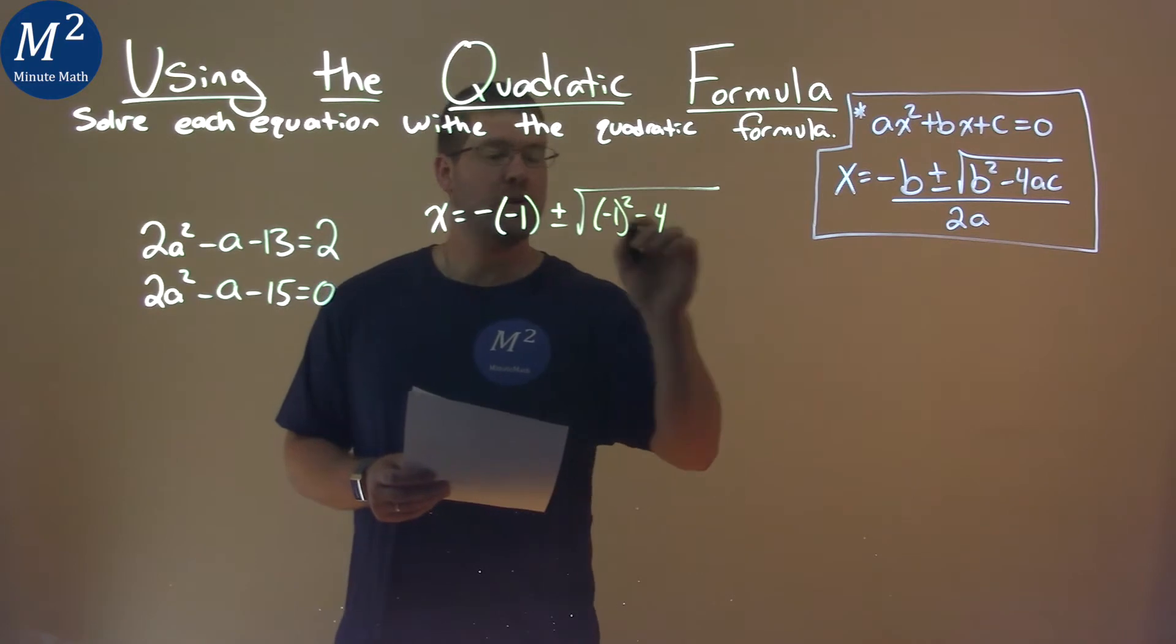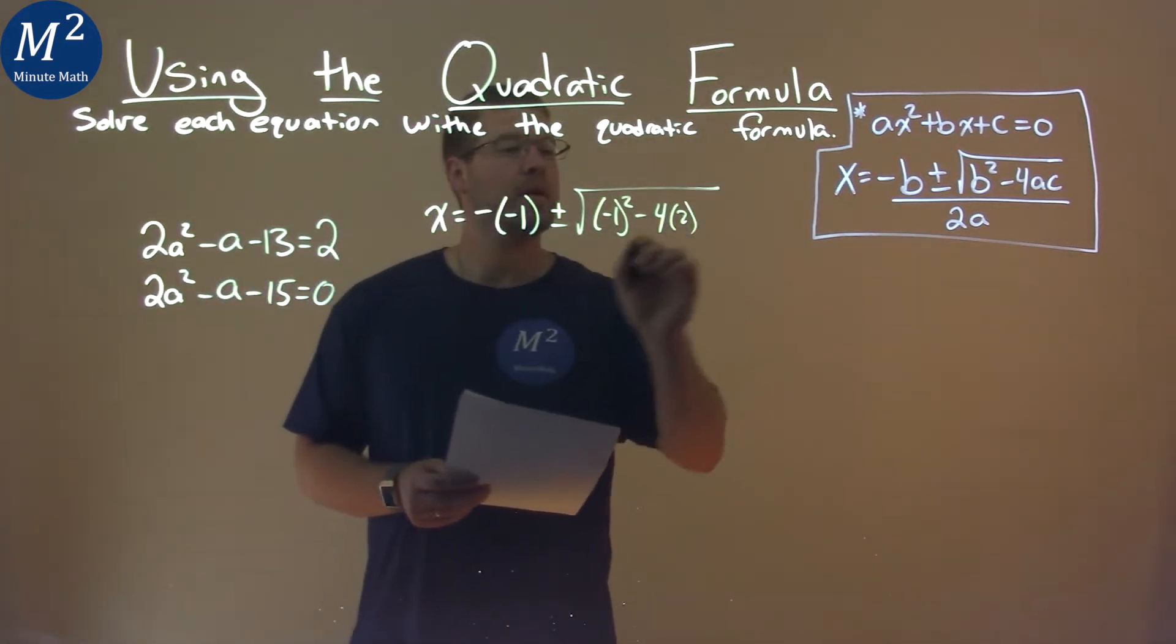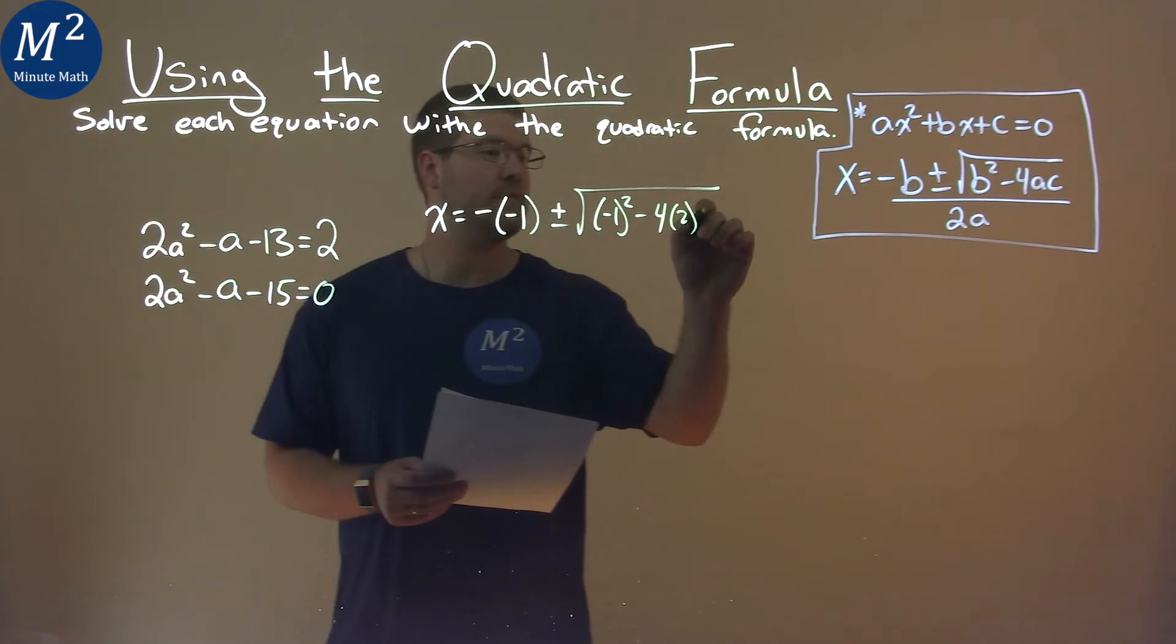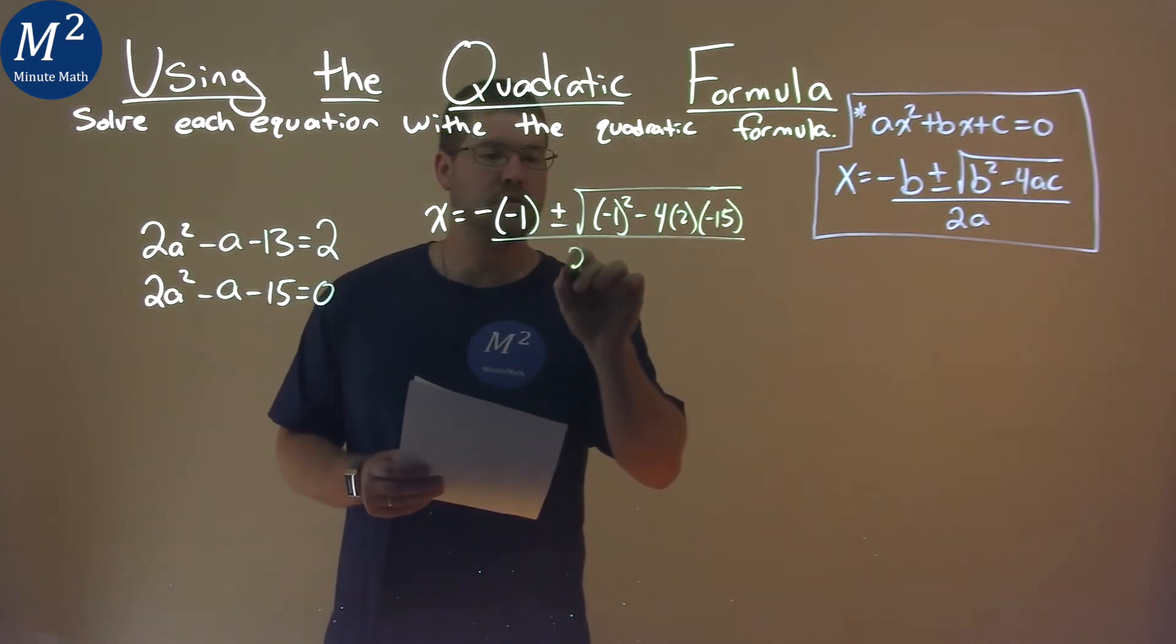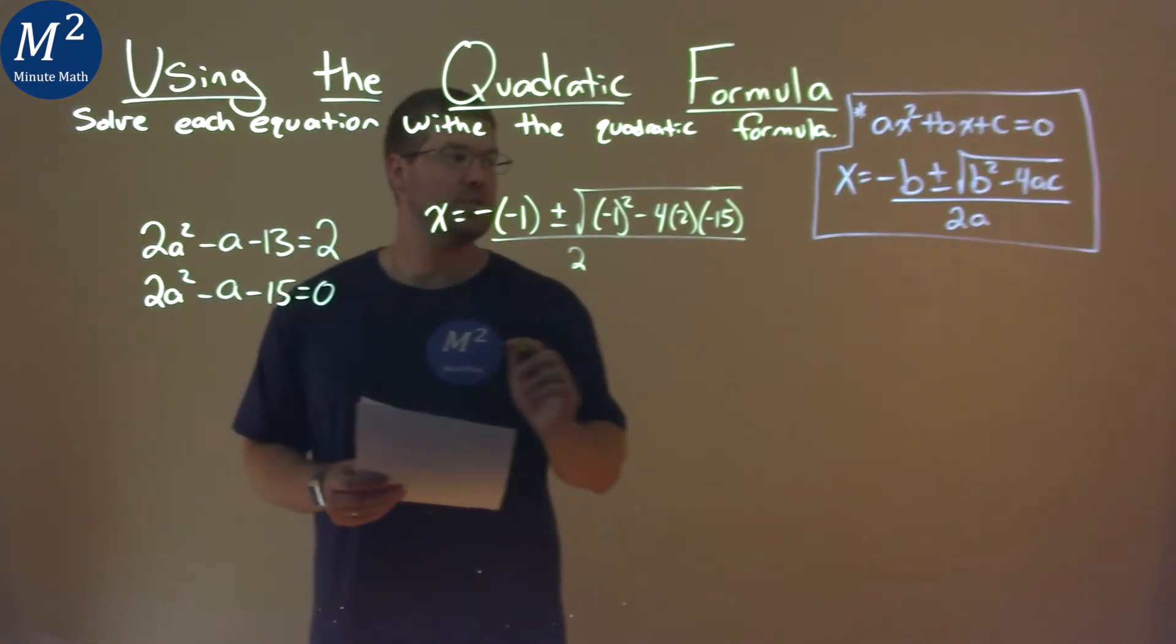minus 4 times a, which is 2, times c, negative 15, all over 2 times a, and the a value is 2.